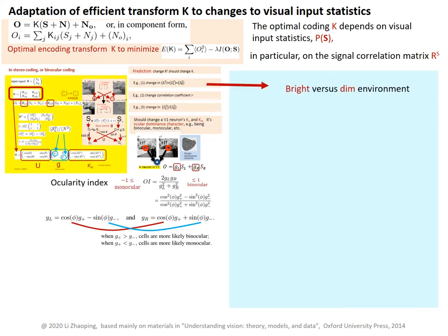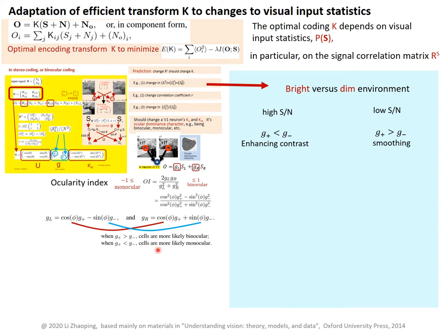For example, if the visual environment changes — sometimes brighter, sometimes dimmer — this gives higher or lower signal-to-noise and therefore higher or lower signal powers in the correlation matrix. This also means higher or lower signal powers in the binocular summation and difference channels, determining G+ and G-. In a brighter environment, you are more likely to have G+ less than G-, enhancing contrast with a stronger gain to the binocular difference. By our general rule, there will be fewer binocular cells in a brighter environment — the fraction of binocular neurons in V1 should increase as the environment becomes dimmer.